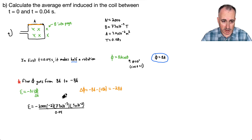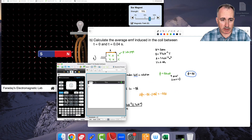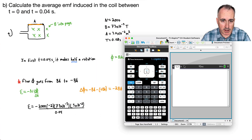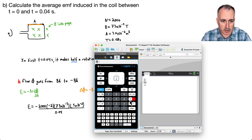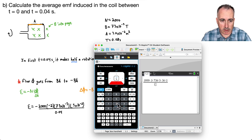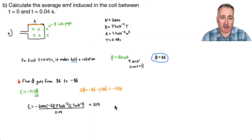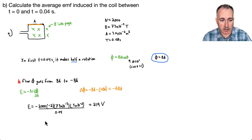I can ignore the minuses because minus times minus gives a plus. Putting it all into my calculator: 2,000 times 2 times 73×10⁻³ times 3×10⁻², all divided by 0.04. I end up with an answer of 219. These are units of volts. With two significant figures, the induced EMF is approximately 220 volts.